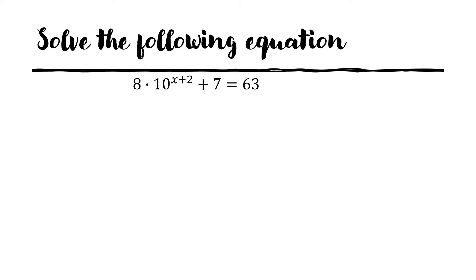Solve the following equation: 8 times 10 raised to the power of x plus 2, plus 7, equals 63. As we can see here, we cannot express 63 with the base of 8, 10, or 7. At the same time, 7 cannot be expressed with the base of 10 or 8. So in this case, we cannot use the usual way of solving exponential equations discussed previously. We have to apply some logarithmic properties.